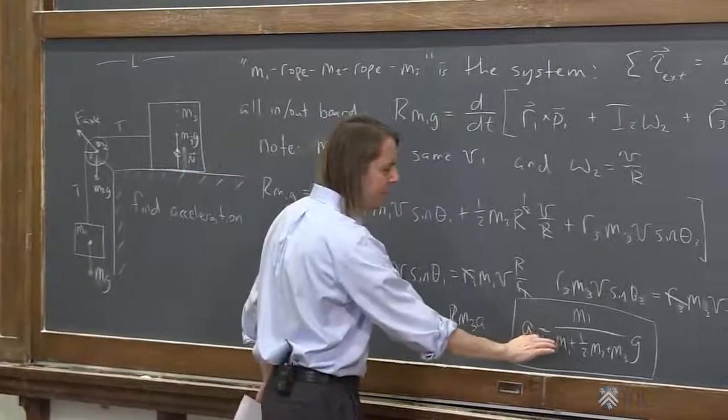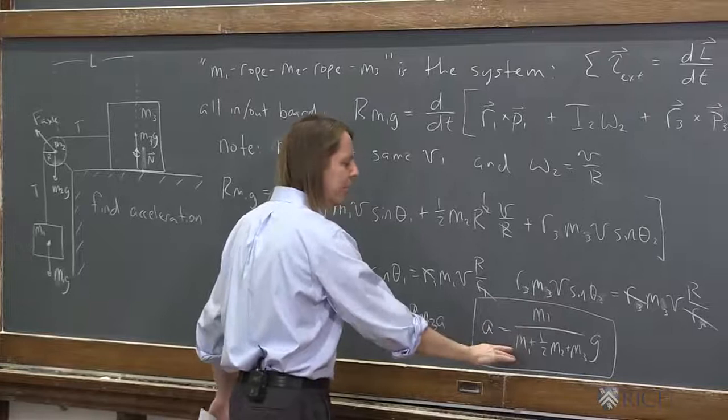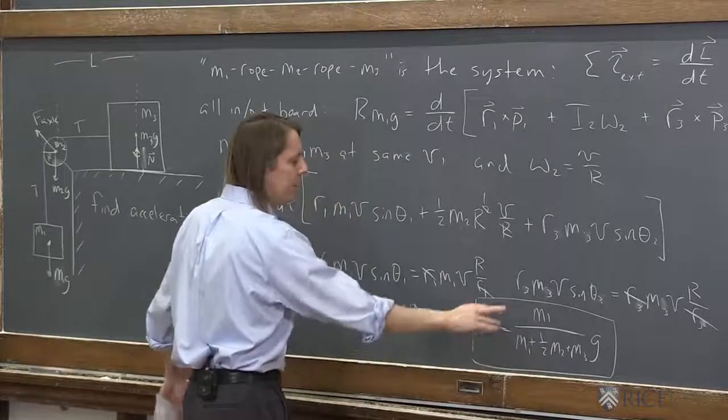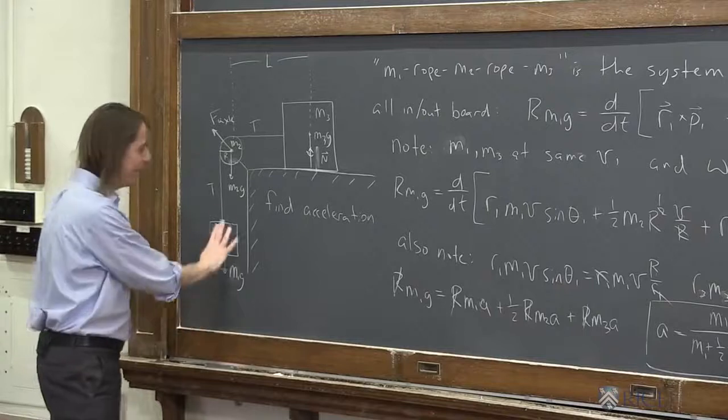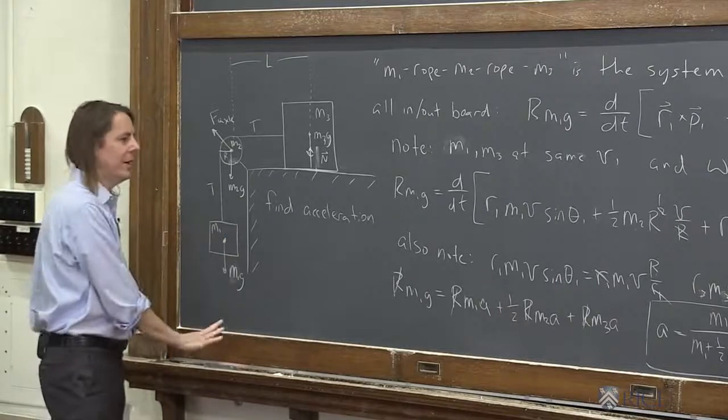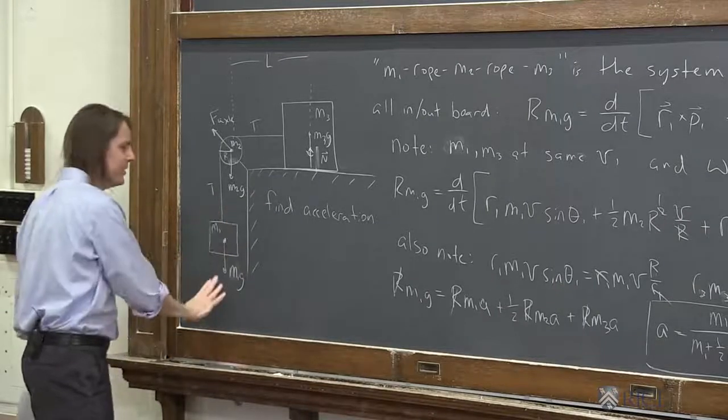Why is it M1, why is it the fraction of M1 over the sum of the masses with a half there? Well, M1 is in the numerator because that's the only one that's driving the motion. The heavier M1 is, the faster it accelerates.